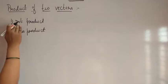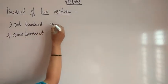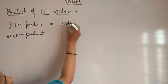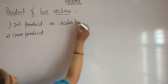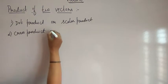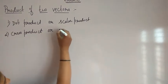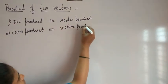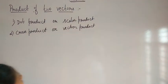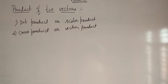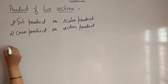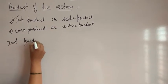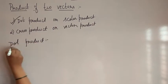Here, the first one is dot product. Dot product is also called as scalar product and cross product is also called as vector product. First, let us study briefly about dot product and know the definition of dot product or scalar product.